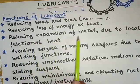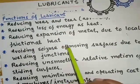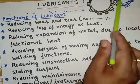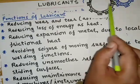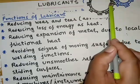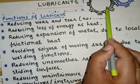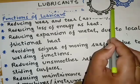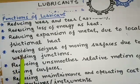The third function of a lubricant is reducing the expansion of metal due to local frictional heat. As discussed earlier, generation of frictional heat leads to high local temperature. When metals are in contact with each other, this high local temperature may cause metal expansion, which affects machine working — and this can be avoided by using a lubricant.